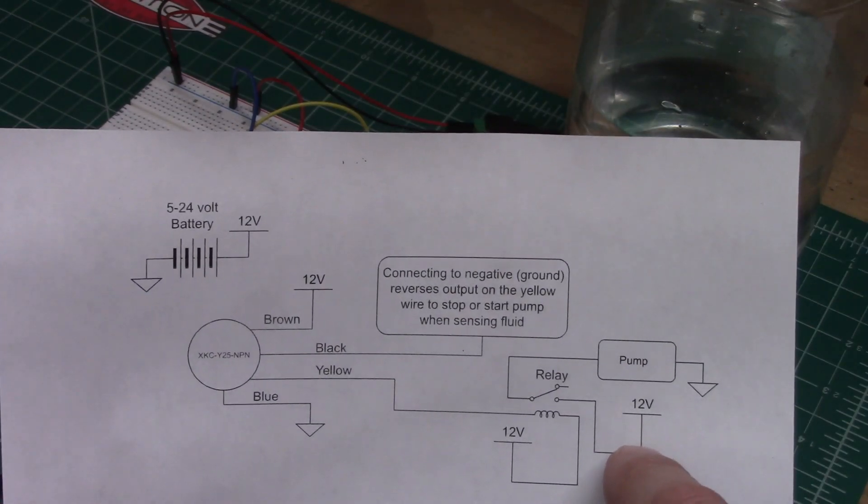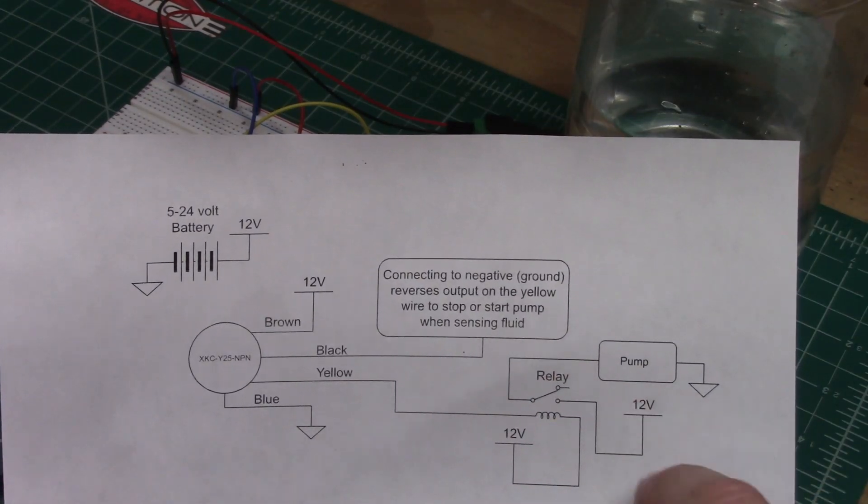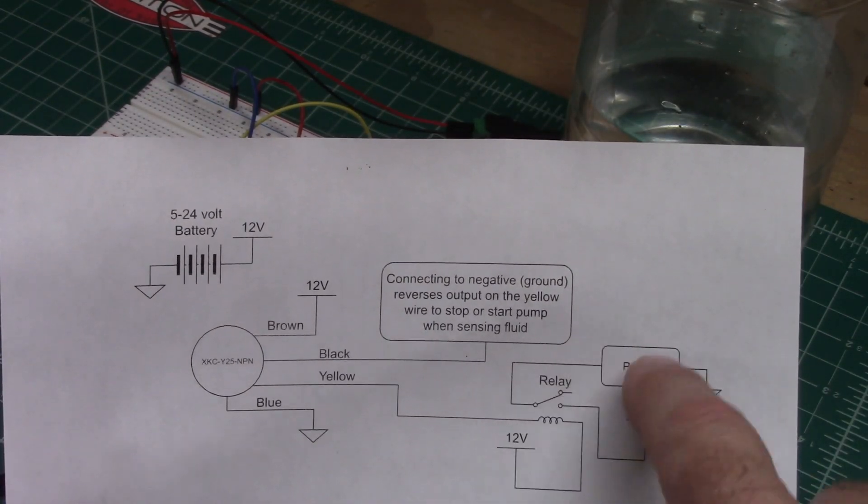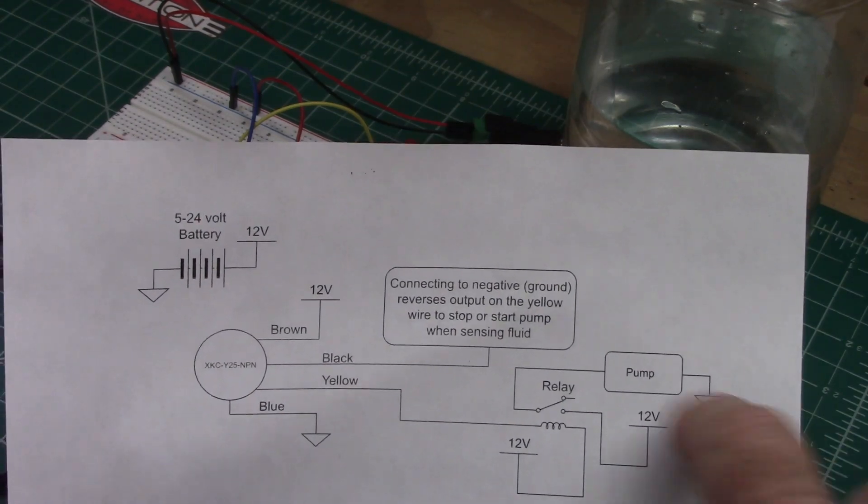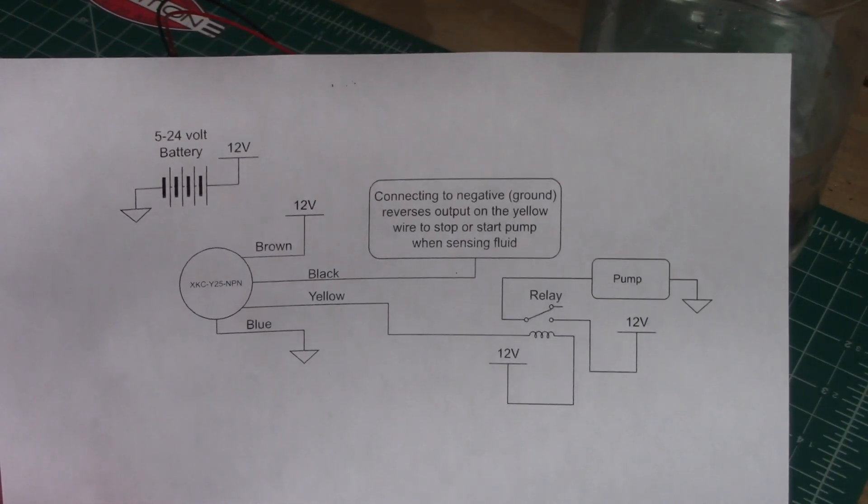And so you would have the positive side of that, you'd switch it inside the relay. When this activates, it'll pull it down and turn your pump on, and then this side is going to go to ground, the other side of your pump. So that's just another view of how this thing works.